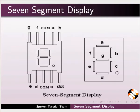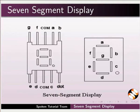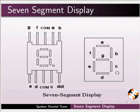In the common cathode 7-segment display, pins A, B, C, D, E, F, G, and dot must be connected to plus 5 volts. The common anode 7-segment display is the exact opposite.